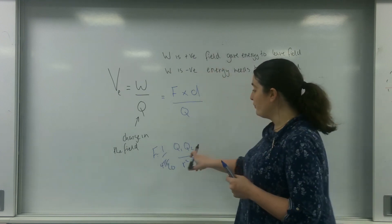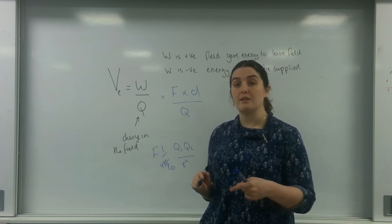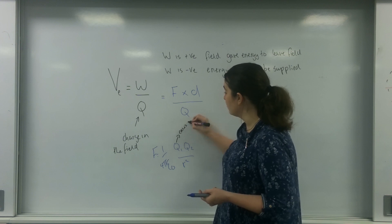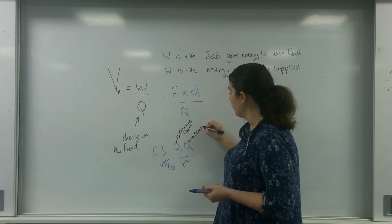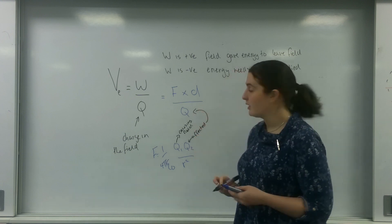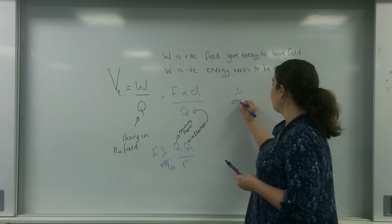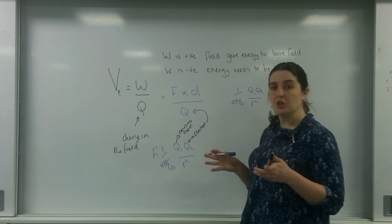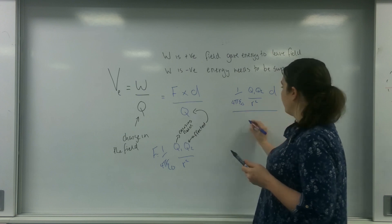One of these Q's is the thing causing the field — I normally say Q1 is the thing causing the field — and Q2 is the charge being affected. So I'm going to put that in: 1 over 4πε₀, times Q1 times Q2 over the distance between the charges squared, times the distance over Q.